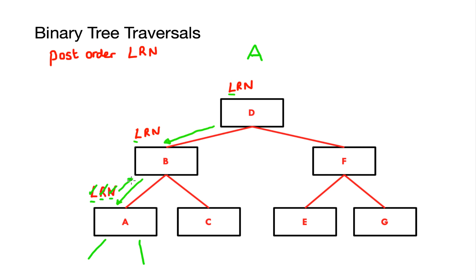Once completed I move back up to B and tick the left rule off. The next rule states I must traverse the right subtree before I can take the node, so I move down to C and rewrite my rule. I check the left subtree — non-existent. I check the right subtree — non-existent. Then I move back up to the node of C and write that down. Once completed all rules at C, I move back up to B. I've ticked off the left rule and the right rule, so now I take the node at B and write that down.